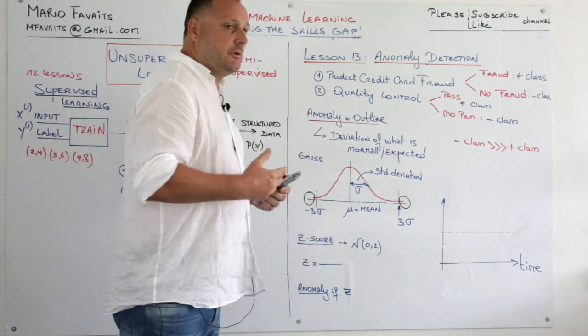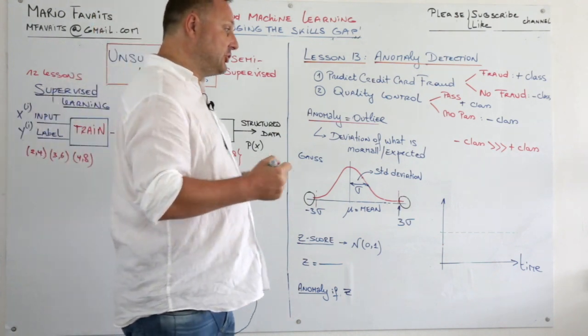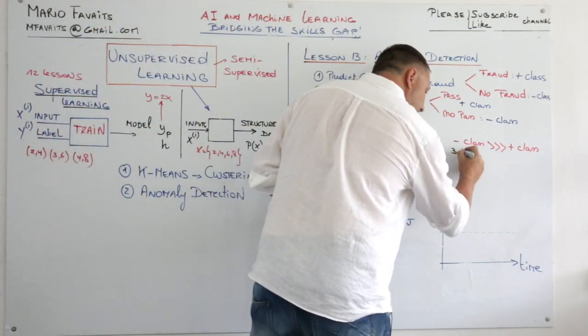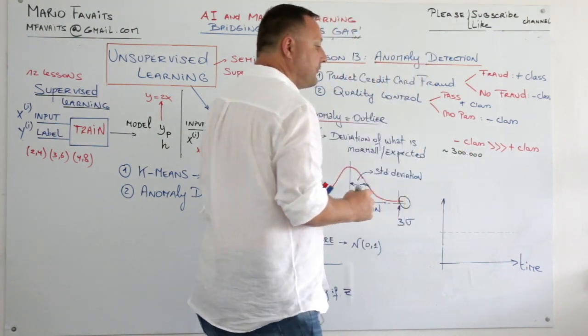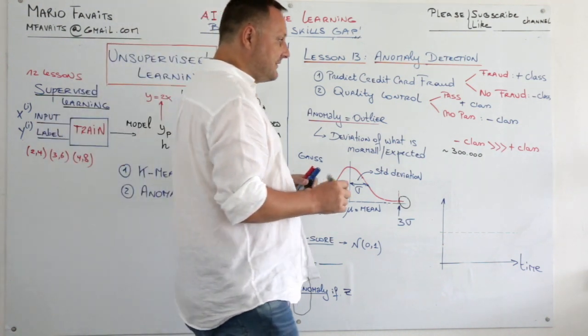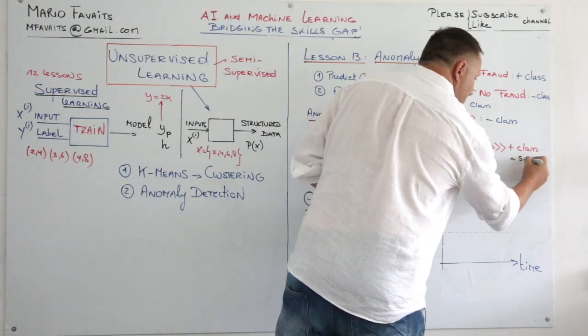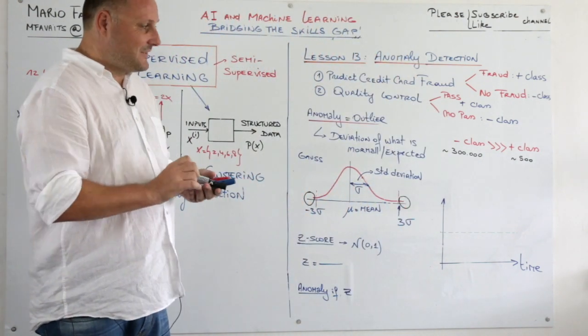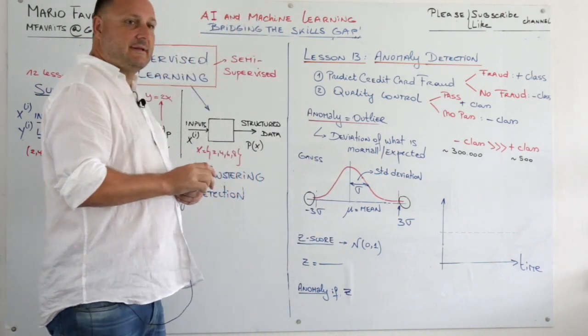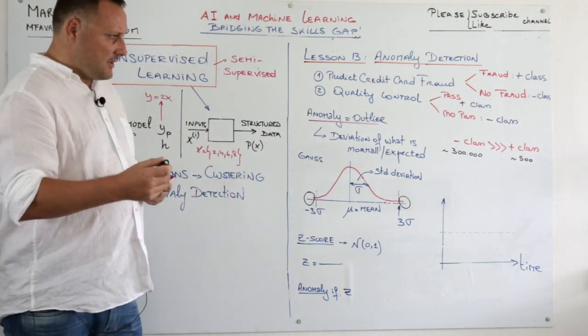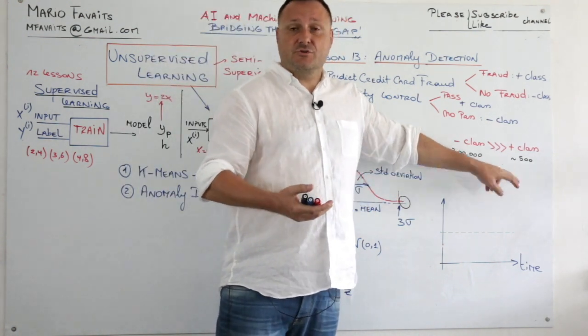That is unique about anomaly detection problems. For example, our coding exercise will be about detecting credit card fraud. In the negative class samples, we will have roughly 300,000 of them. Whereas in the positive class we only have 500, roughly 500. So this is the main difference, I would say, between anomaly detection and classification.